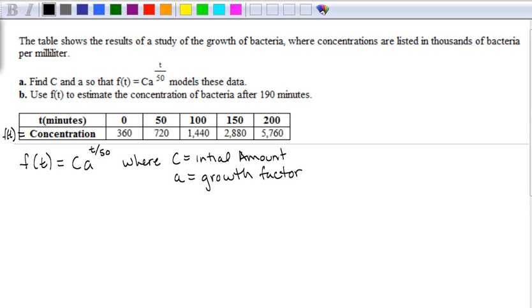So we know in this case that the initial amount, when t is zero, starts with 360. And the growth factor is what we multiply to get to the next one. So if we take 720 divided by 360, you would get 2, which is the growth factor.